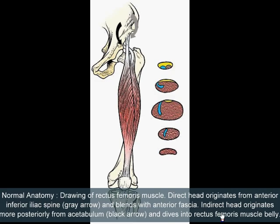Now let's review the normal anatomy. This is the drawing of the rectus femoris muscle. The direct head originates from the anterior inferior iliac spine and the indirect head originates posteriorly from the acetabulum. The direct head blends with the anterior fascia and the indirect head is buried within the muscle belly.